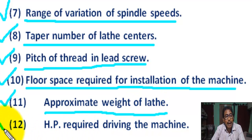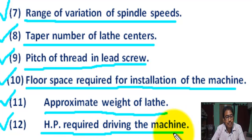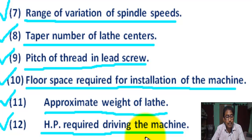Number twelve: horsepower (HP) required to drive the machine — that means the power required to drive the lathe must be indicated.